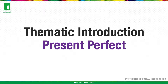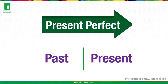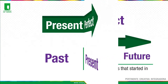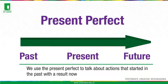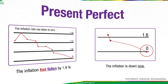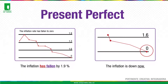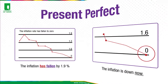Present Perfect connects Past with Present. We use Present Perfect to talk about an action that started in the past with a result now. For example: the inflation has fallen by 1.9% — the inflation is down now.